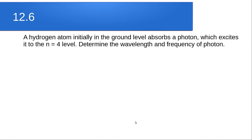Question 12.6: a hydrogen atom initially in the ground level absorbs a photon which excites it to the n = 4 level. Determine the wavelength and frequency of the photon. A photon is absorbed by an electron and the energy propels it to the n = 4 level; we must calculate the wavelength and frequency of that photon.